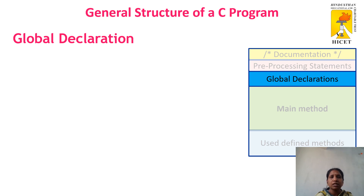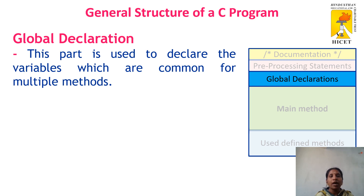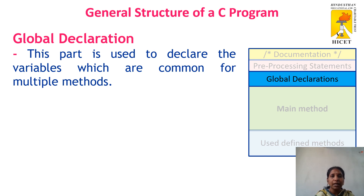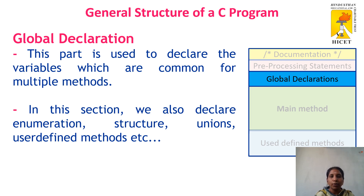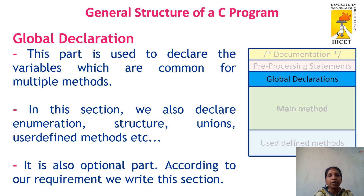Next comes the global declaration. As the name specifies, 'global' means universal — it can be used anywhere. Here we declare some variables as global variables, and those variables can be used anywhere in the program. This part is used to declare variables which are common for multiple methods. Not only variables, we can also declare enumerations, structures, unions, and user-defined methods as part of the global declaration. This is also an optional part in C.